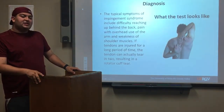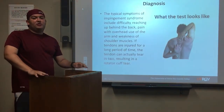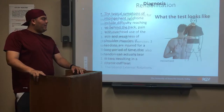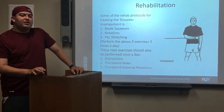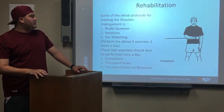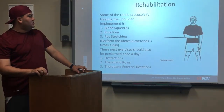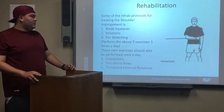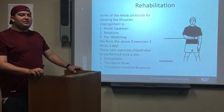Diagnosis: The typical symptoms of impingement syndrome include difficulty reaching behind the back, with overhead use of the arm and weakness of the shoulder muscles. If tendons are injured for a long period of time, the tendon can actually tear, resulting in a rotator cuff injury.